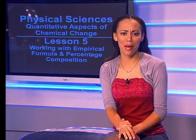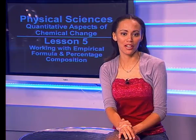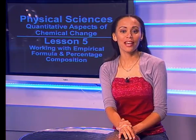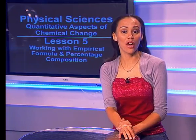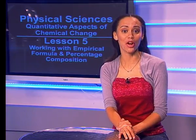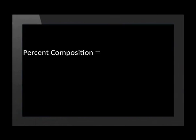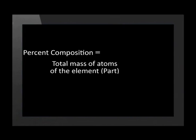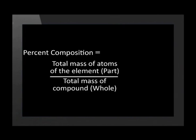What do you remember about percentage composition? This is the percentage of the mass a certain element has in relation to the total mass of a compound. To calculate the percentage composition, we take the mass of each type of atom in the compound, divide it by the total mass of the compound, and then multiply it by 100.